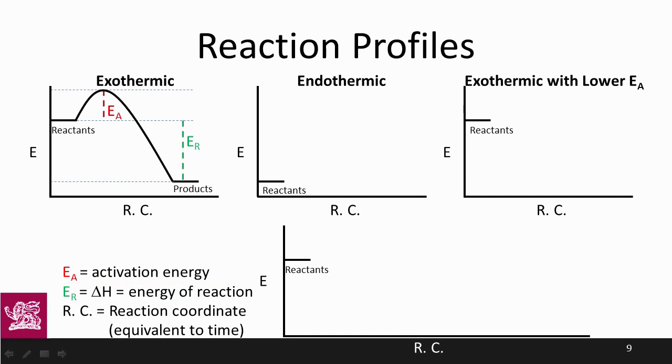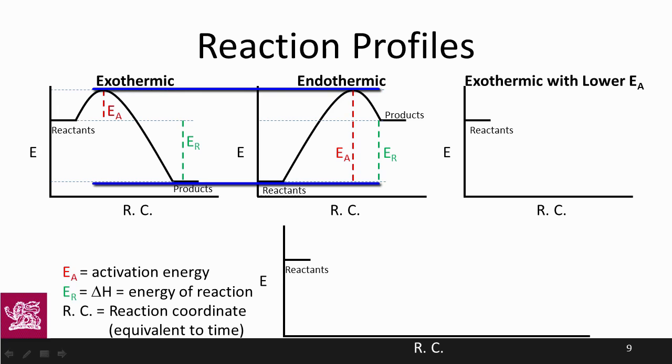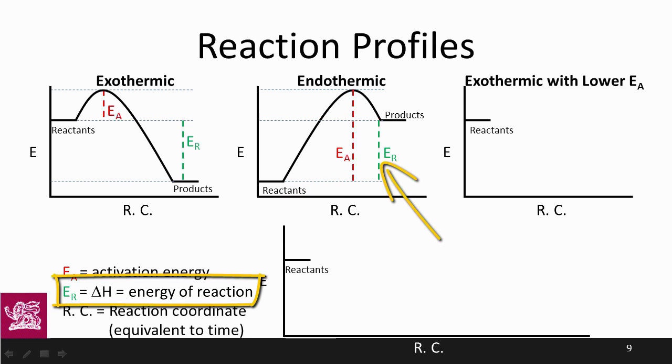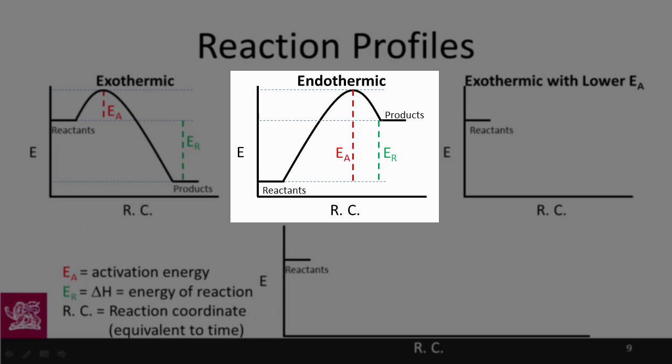For an endothermic process, we know that we need to put energy in, which means that the energy of the reactants is lower than the energy of the products. You can see the activation energy here is very large, and the energy of the reactants is smaller. There's still the same difference in the graph, so still the highest point to the reactants is the activation energy, and still the difference between the reactants and products is the energy of the reaction or the delta H value. Here we see a positive value because we have products minus reactants, and this is an endothermic reaction profile.